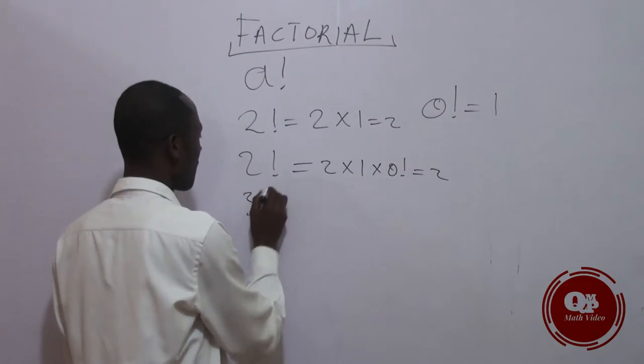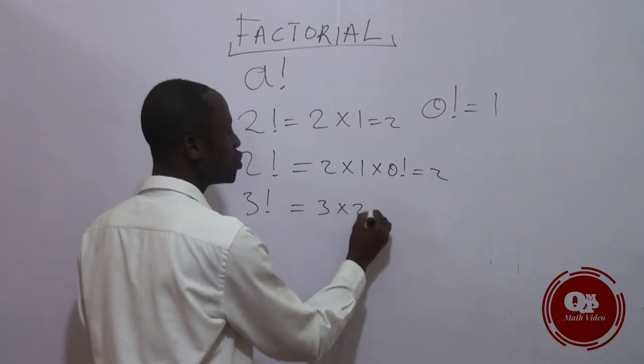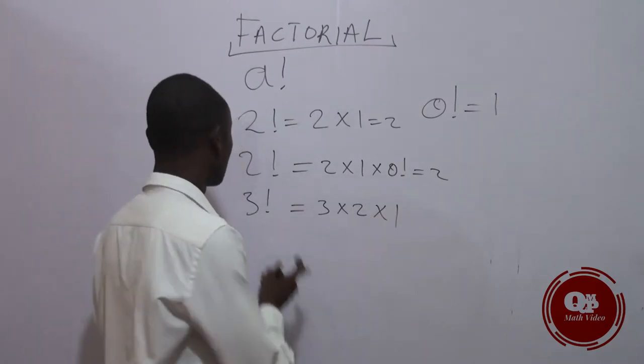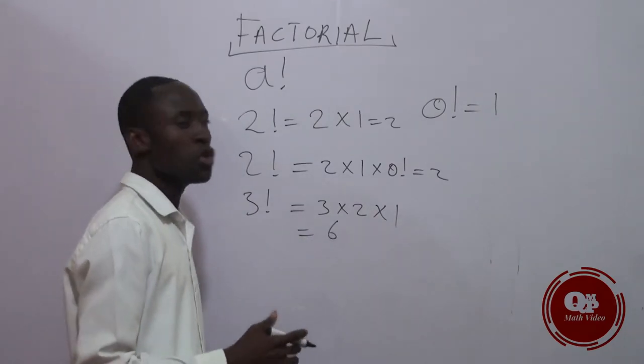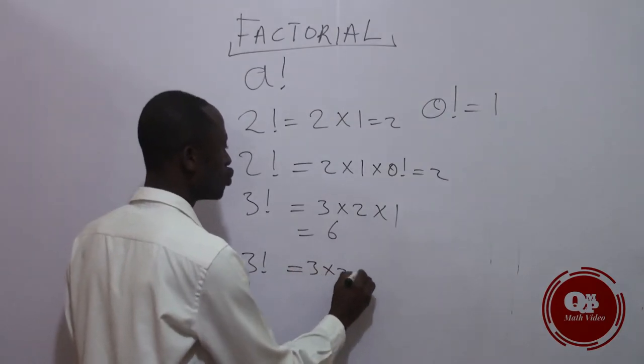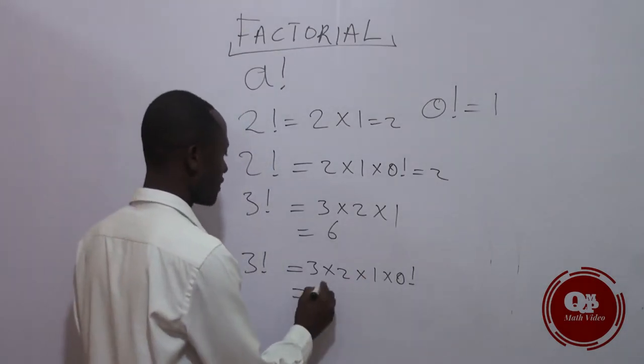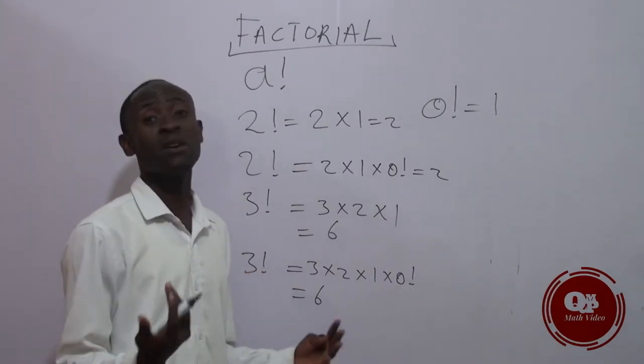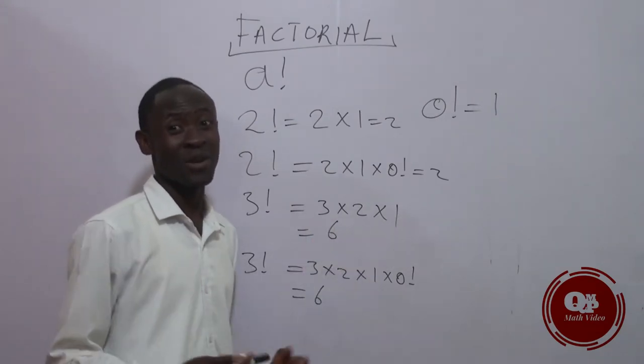Now for three factorial: three factorial equals three times two times one. Three times two equals six. Three factorial equals three times two times one times zero factorial, which equals six. So zero factorial - it equals one, which gives us three times two, which equals six.